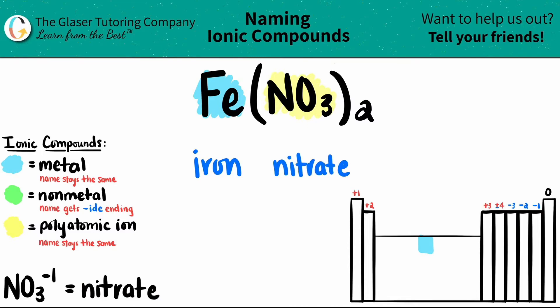But now we just have to do a little check. Is my metal a transition metal? And yes, it is. Iron is in the transition metal area of the periodic table. So whenever you do have a transition metal, you have to include the Roman numeral. And the Roman numeral is always the charge of the metal.